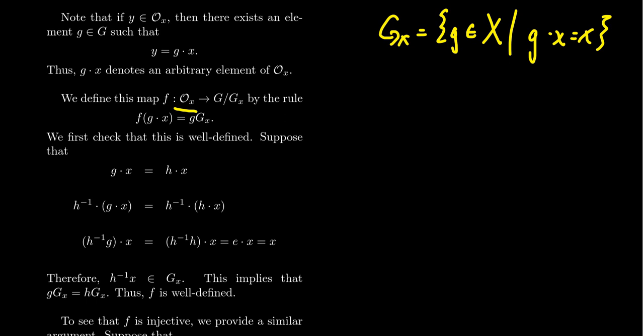As such, when we take the subset O_x, we don't claim there's any algebraic structure here. We're not claiming that phi is going to be an isomorphism or a homomorphism of any kind. We are just trying to construct a bijection. Now the rule is that we take the element g dot x and send it to the coset represented by g. Now there's a lot of problems we have to check. Is this thing even well-defined?